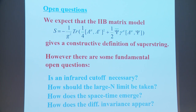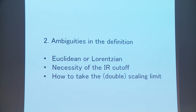There are some open questions about the 2B matrix model. We expect it gives a constructive definition of superstring theory, but there are fundamental open questions: Is an infrared cutoff necessary? How should the large-N limit be taken? How does space-time emerge? How does diffeomorphism invariance appear? I would like to discuss these problems.